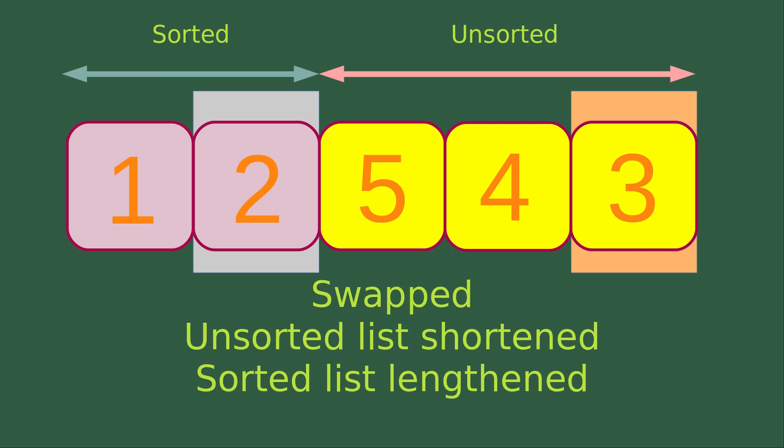Now I have done the swapping between the two elements. And in this situation, I have one more sorted element which is simply the element with number two. So now I put it on the second element in the whole list. So now the sorted list is lengthened while the unsorted list is shortened.